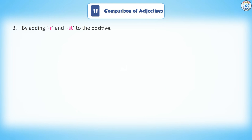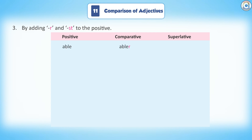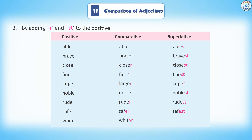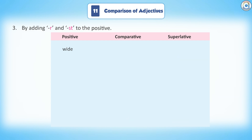Rule 3: By adding -R and -ST to the positive degree. Positive, comparative, superlative: Able, abler, ablest. Brave, braver, bravest. Close, closer, closest. Fine, finer, finest. Large, larger, largest. Noble, nobler, noblest. Rude, ruder, rudest. Safe, safer, safest. White, whiter, whitest. Wide, wider, widest.